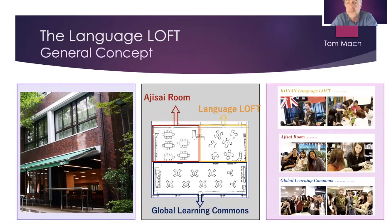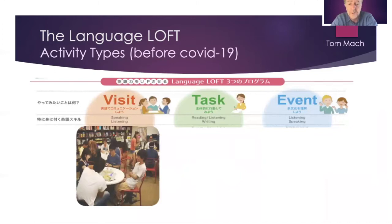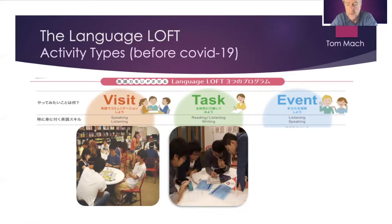Learner autonomy and solitary learning opportunities are still offered and stressed, but the most important thing is offering communication interaction opportunities. We offer three kinds of activities. Visits are things like playing games or chat circles conducted in English. Tasks are more typical worksheet-based activities or maybe video lessons, and these can be completed alone or with friends. Events are the workshops and presentations, usually hosted by our student staff, but sometimes by teachers as well.